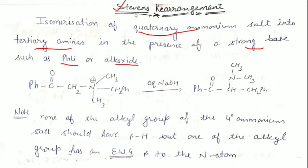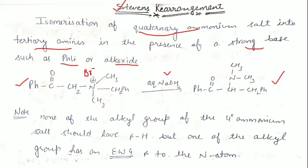For example, we can explain Stevens rearrangement by this reaction. We have taken this quaternary ammonium salt — here nitrogen has a positive charge, and to show salt there is a negative counterpart, we can represent bromide. So this is the quaternary ammonium salt. On treatment with base, sodium hydroxide, it converts into tertiary amine. This is Stevens rearrangement.